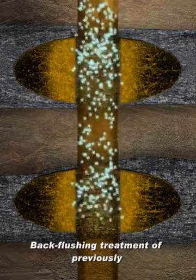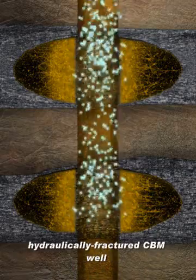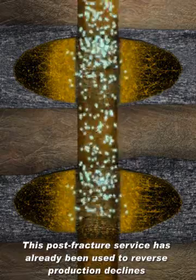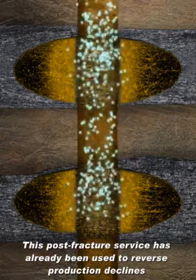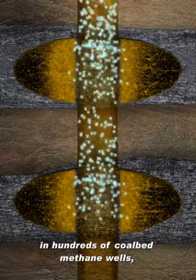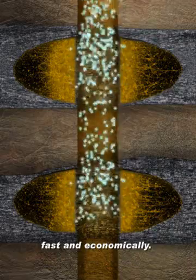Back flushing treatment of previously hydraulically fractured CBM wells. This post fracture service has already been used to reverse production declines in hundreds of coal bed methane wells, fast and economically.